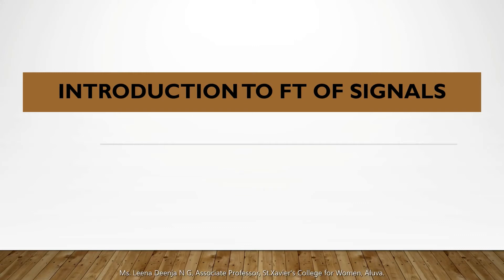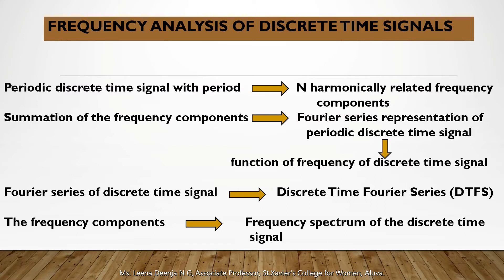Today we are going to study frequency analysis and the frequency spectrum of discrete time signals, and the definition of discrete time Fourier transform. A periodic discrete time signal with fundamental period N can be decomposed into N harmonically related frequency components. The summation of these frequency components gives the Fourier series representation of the periodic discrete time signal, in which the signal is represented as a function of frequency omega.